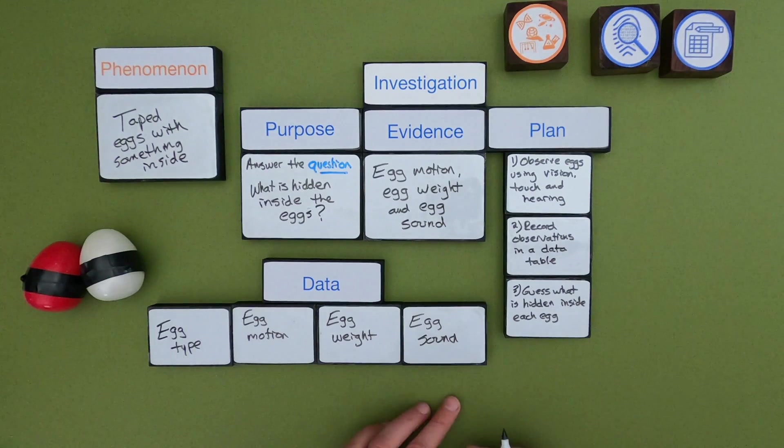Okay so now we've got a data table. These are going to be the big headings. What I'm going to measure is going to be the egg type, egg motion, egg weight, and egg sound. So you could write things below it but let me put a space where you could actually write those down.